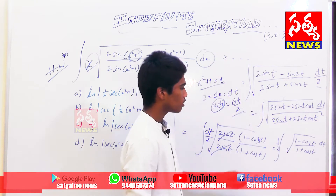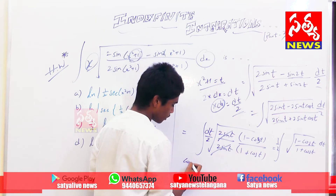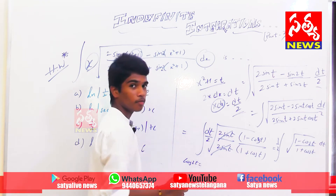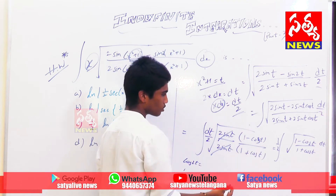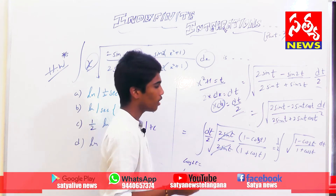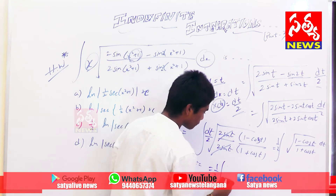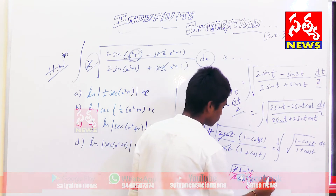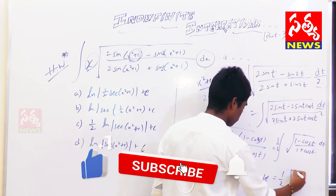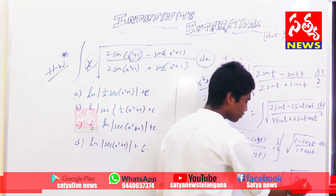Now we are left with (1 minus cos t) by (1 plus cos t). Remember the expansion of cos 2t — it can be written in both ways, in terms of sine and also cos. So here we get 1 minus cos t as 2 sin²(t/2) and 1 plus cos t as 2 cos²(t/2). So it becomes the square root of 2 sin²(t/2) divided by 2 cos²(t/2).